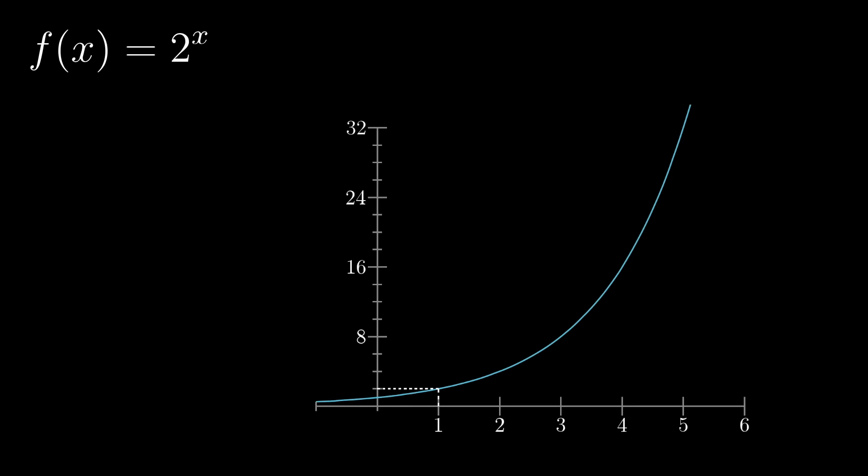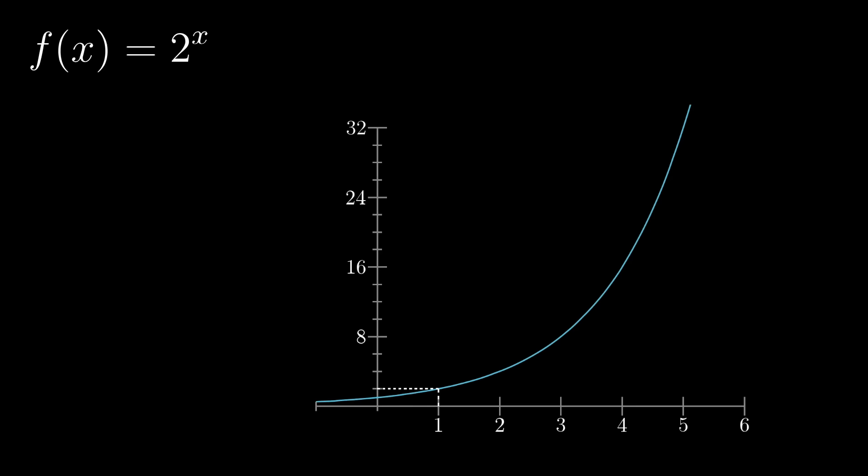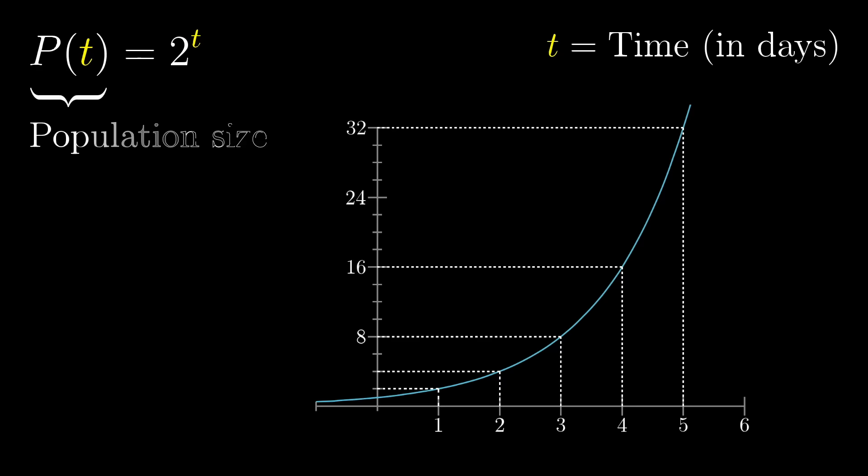First of all, to get an intuition, let's just focus on the function 2 to the x. And let's think of that input as a time t, maybe in days, and the output, 2 to the t, as a population size, perhaps of a particularly fertile band of pie creatures, which doubles every single day.